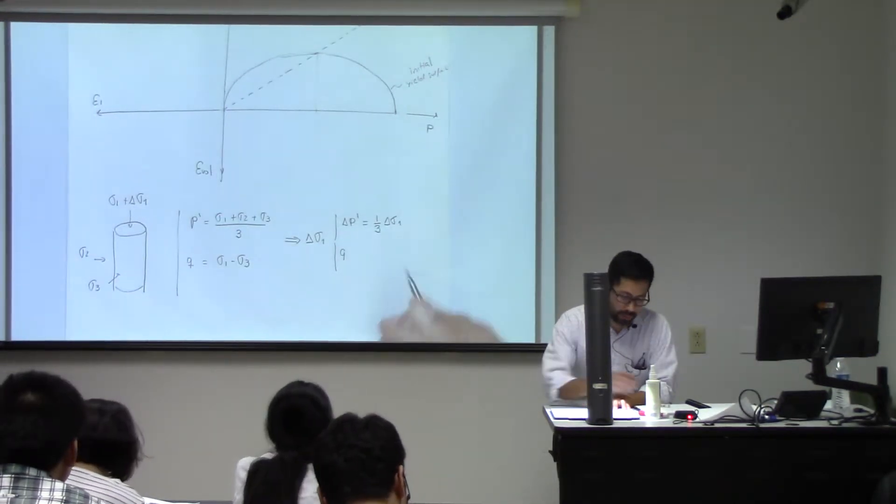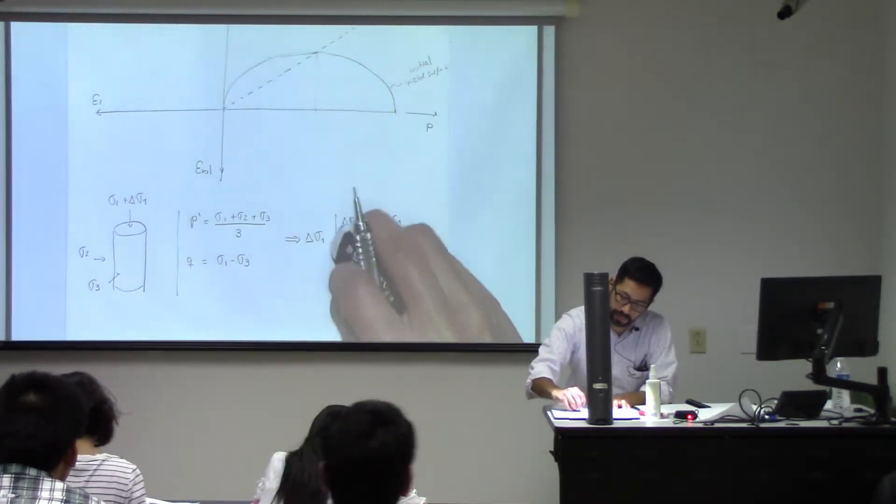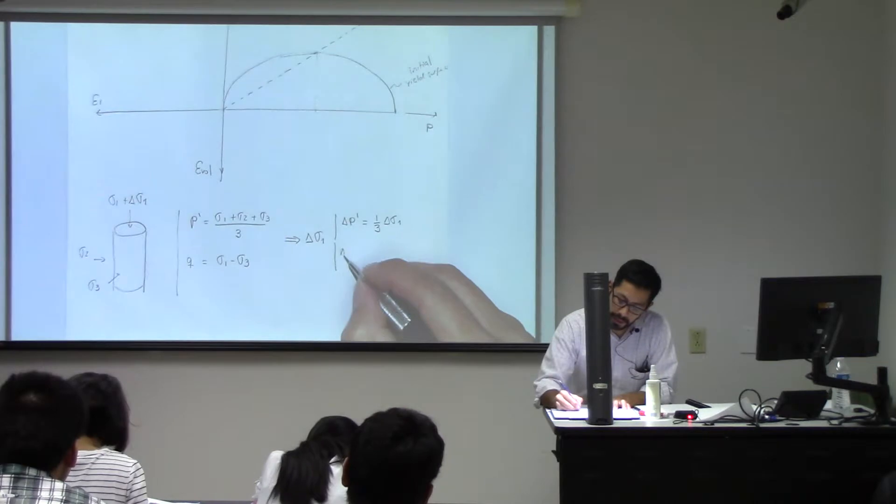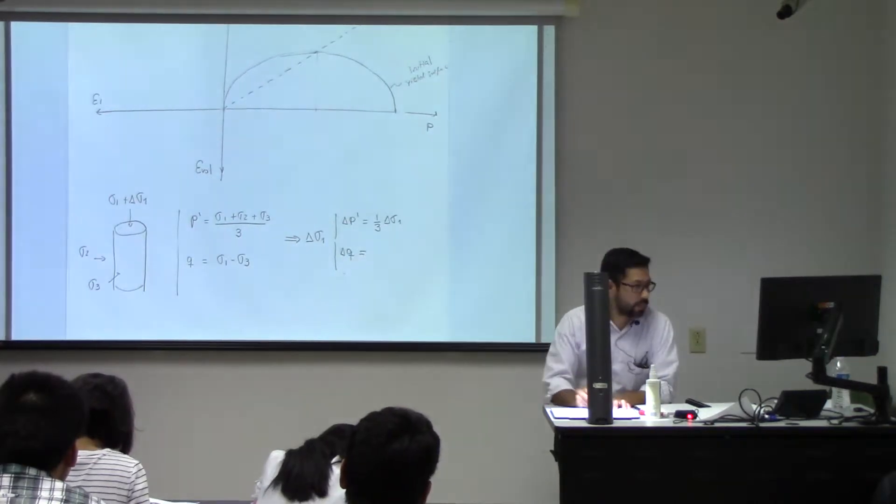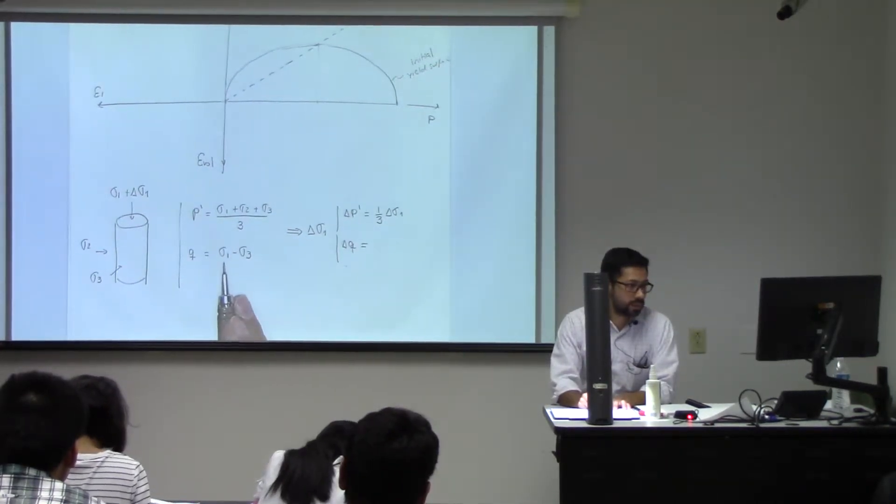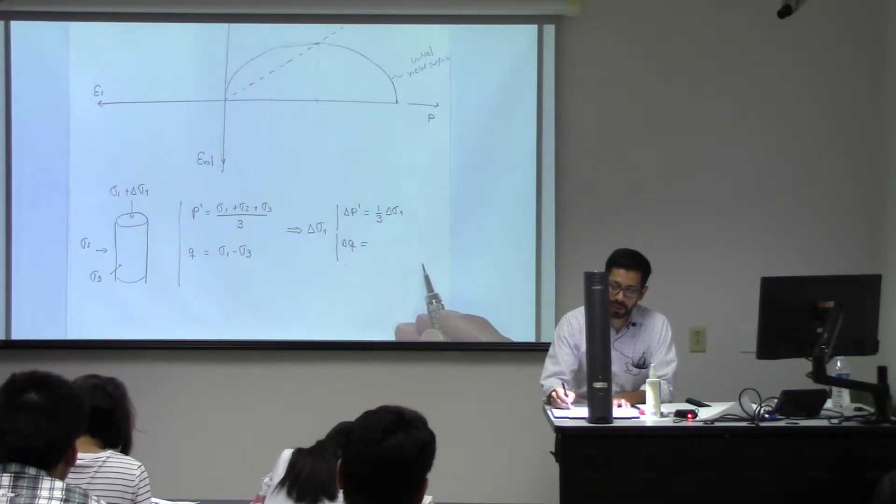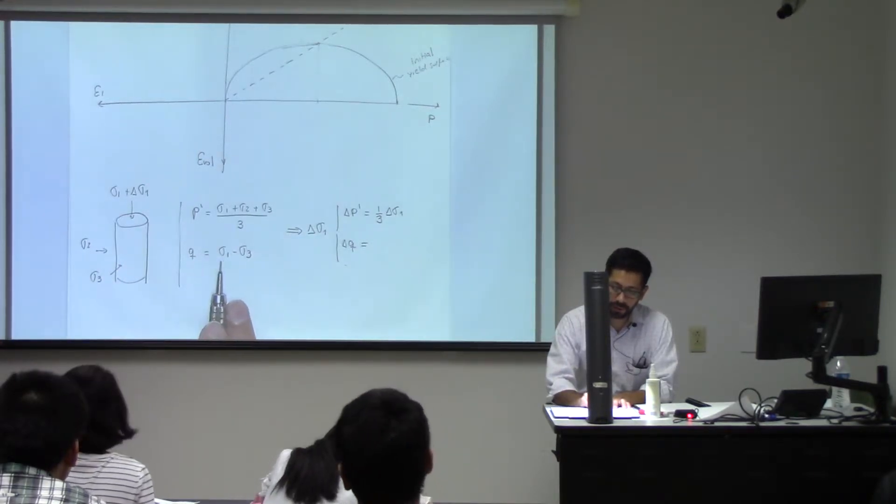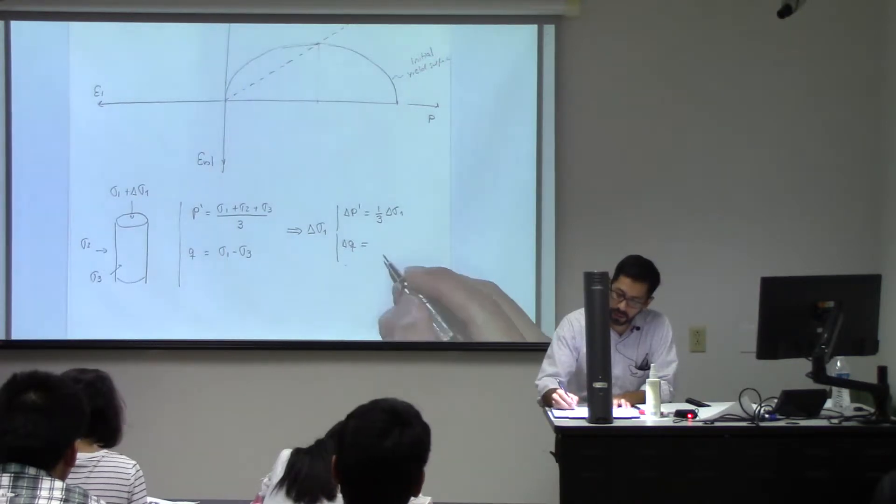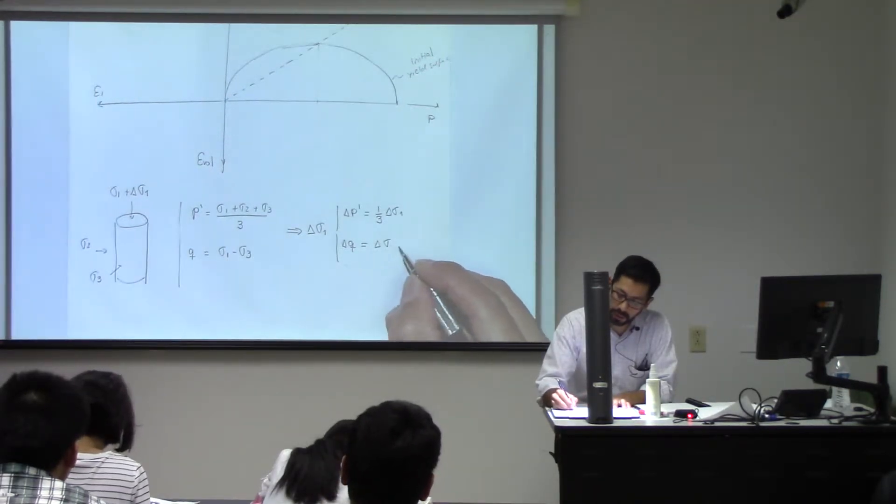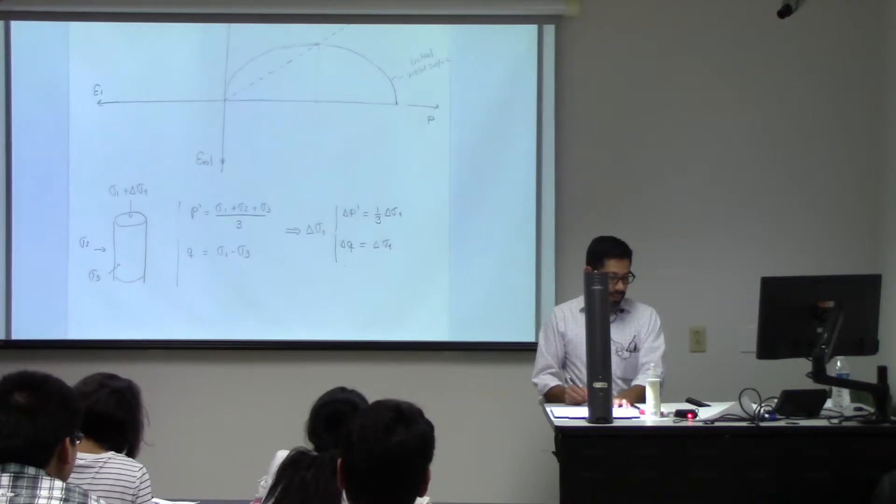And what is going to be the change in delta Q? Zero? No, it's not going to be zero. The derivative of Q with respect to sigma one is just going to be one, or just delta sigma one.